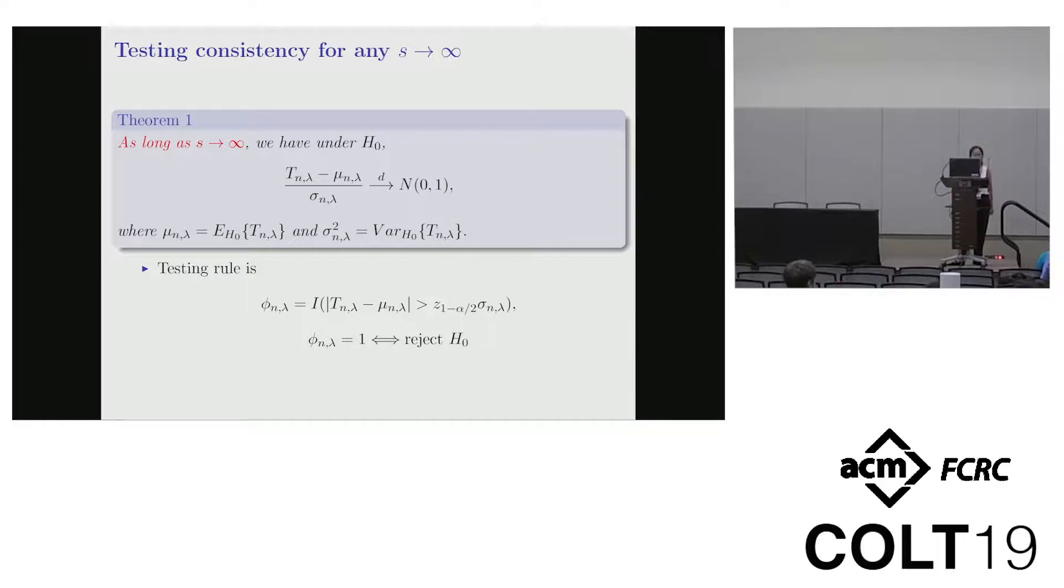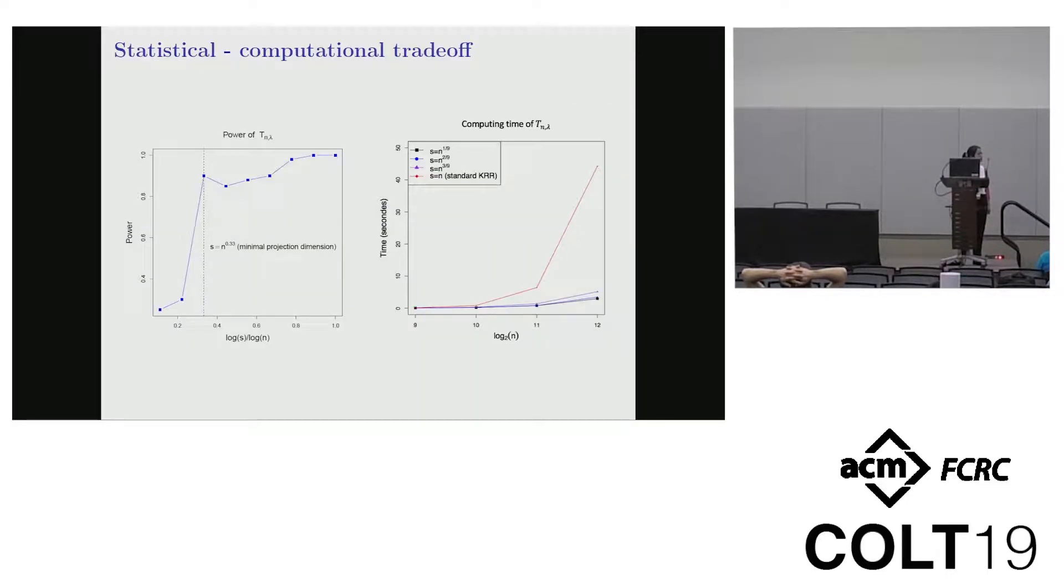Here, this is our first result. Our first result is about the testing consistency. It shows that under a very mild condition, our standardized test statistic can asymptotically distribute as a standard normal. This is very good because under this kind of standard normal, we can use the Z value to get our testing rule as shown here.